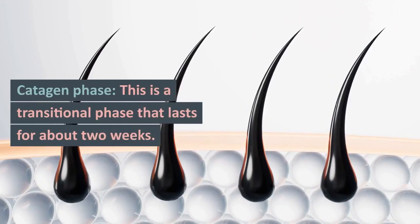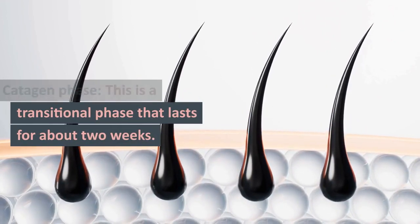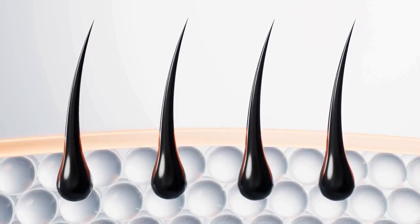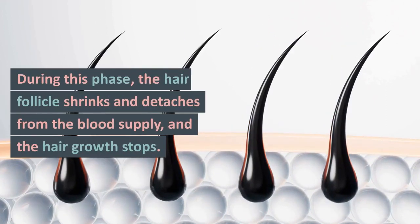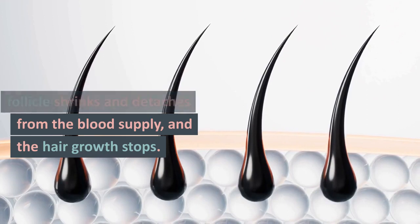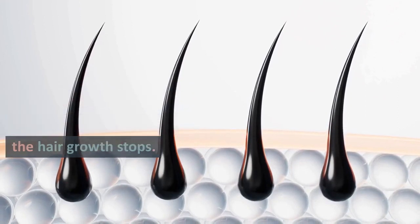Catagen phase. This is a transitional phase that lasts for about 2 weeks. During this phase, the hair follicle shrinks and detaches from the blood supply, and the hair growth stops.